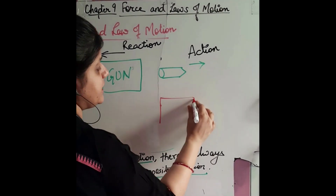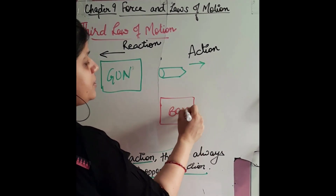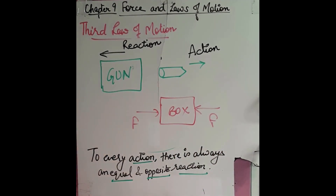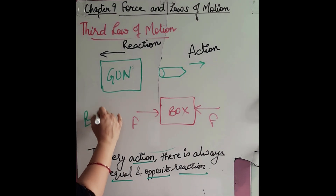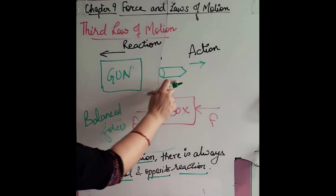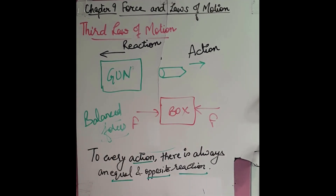However, if you have one single box with an equal force applied from one side and the same force applied from the other side, then those forces, being equal and opposite, will cancel each other. That is the condition of balanced forces, which you studied earlier. But that situation is different — action and reaction forces are not balanced forces because they act on two different objects, so they will never cancel each other.